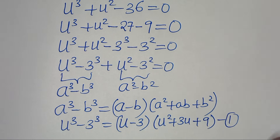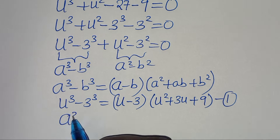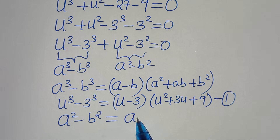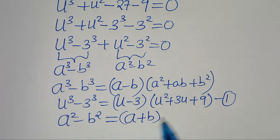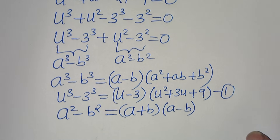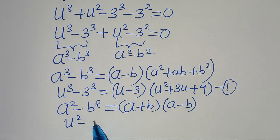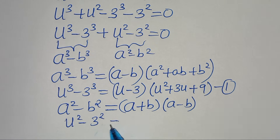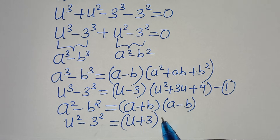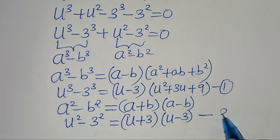Let's call this equation 1. The second part is a difference of two squares: u^2 minus 3^2, which follows the identity a^2 minus b^2 equals (a plus b)(a minus b). So u^2 minus 3^2 becomes (u plus 3)(u minus 3). Let's call this equation 2.